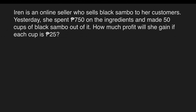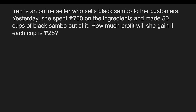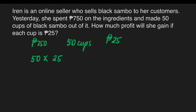Another example: Irene is an online seller who sells black sambo to her customers. Yesterday, she spent 750 pesos on the ingredients and made 50 cups of black sambo out of it. How much profit will she gain if each cup is 25 pesos? Our given are: 750 pesos as Irene's capital, 50 cups, and 25 pesos per cup. Our mathematical expression will be 50 times 25, then minus 750 to find the profit.